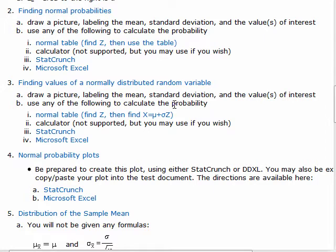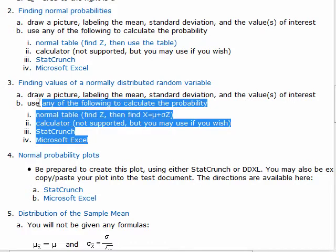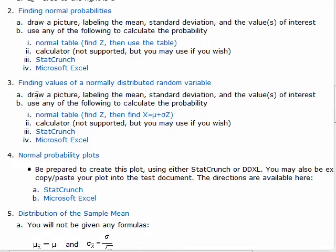Then in reverse, finding the values of a normally distributed random variable where you're given a probability or given an area. And so these, a lot of people struggle with these. And I'm telling you you're going to be asked one of these. So look at the practice exam. What was the practice exam question about? Oh, something about the height of one-year-old boys. That's this type of question where you're given a probability. In that case, you're told which percentile it's in and asked to find the value.